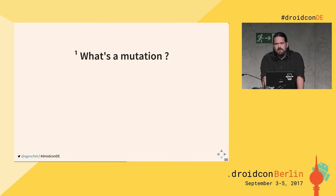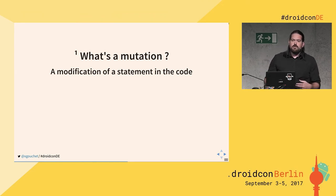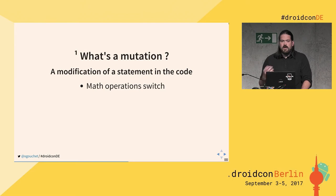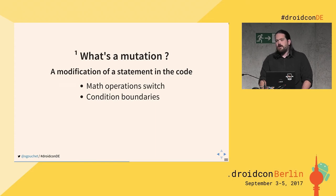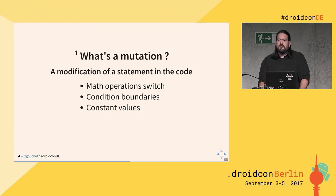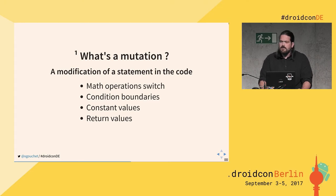A mutation is a modification of a statement in the code. Examples include: changing a math operation (e.g., A plus B becomes A minus B, or A times B becomes A divided by B), changing condition boundaries (e.g., greater-or-equal becomes just greater), changing equals to not-equals, changing boolean conditions, changing constant values (e.g., changing an integer's value), or changing return statements (e.g., making a method always return nil). There are many more kinds of mutations possible.